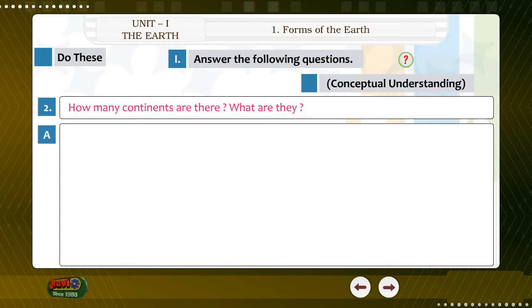Answer. There are 7 continents on the earth. They are Asia, Europe, Africa, North America, South America, Australia and Antarctica.